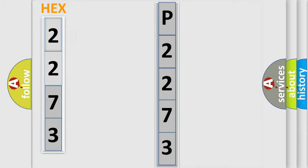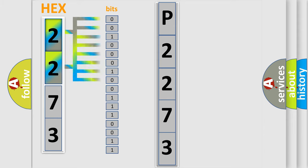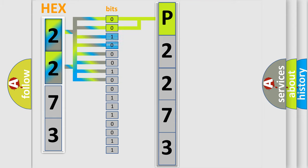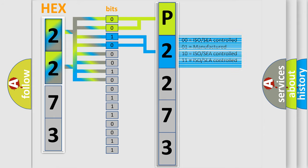The error code is split into two bytes consisting of 16 bits. One bit is the basic unit that each computer works with. The bit has two logical states: 0, low level, and 1, high level. By combining the first two bits, the basic character of the error code is expressed. The next two bits again determine the second character. The last bits of the first byte define the third character of the code.